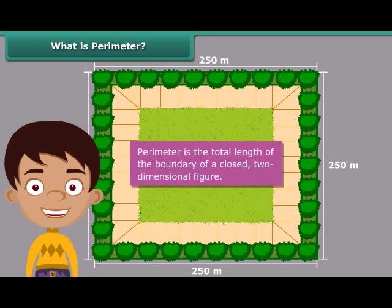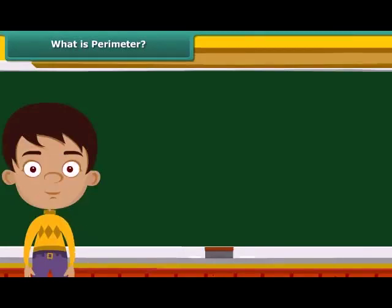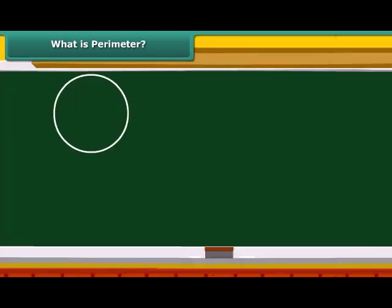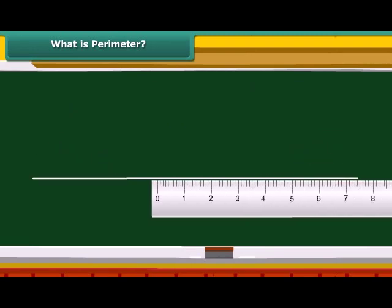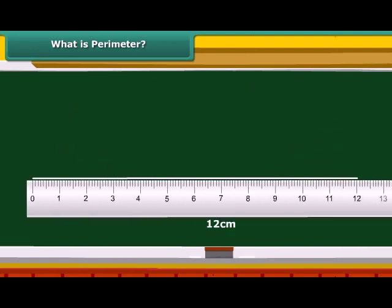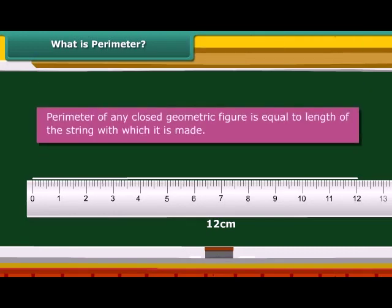Perimeter is the total length of the boundary of a closed two-dimensional figure. Here is a simple technique of measuring the perimeter of a shape: take a closed geometric shape such as a circle, square, triangle, or rectangle made of string. Untie the string and measure its length. The length of the string is the perimeter of the chosen geometric shape. We can generalize by saying that the perimeter of any closed geometric figure is equal to the length of the string with which it is made.